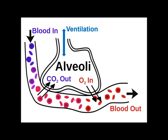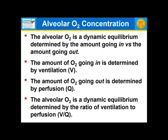This is referred to as VQ — V for ventilation, Q for perfusion. Q is the symbol used for perfusion. The amount of oxygen coming in by ventilation versus the amount going out by perfusion determines the concentration or fraction of oxygen in the alveolus. Alveolar O2 is a dynamic equilibrium: the amount going in is determined by ventilation, the amount going out by perfusion. So alveolar O2 concentration is determined by the ratio of ventilation to perfusion, or VQ.